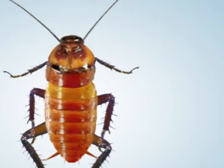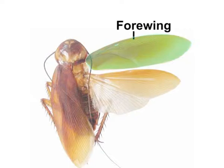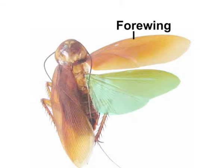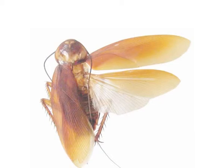The anterior pair of wings, called the fore wings, are leathery, thick, brown and opaque. They are used to provide a cover to the second pair of wings. The second pair, called the hind wings, lies underneath the first pair and is used by the cockroach for flight. The abdomen consists of ten segments.